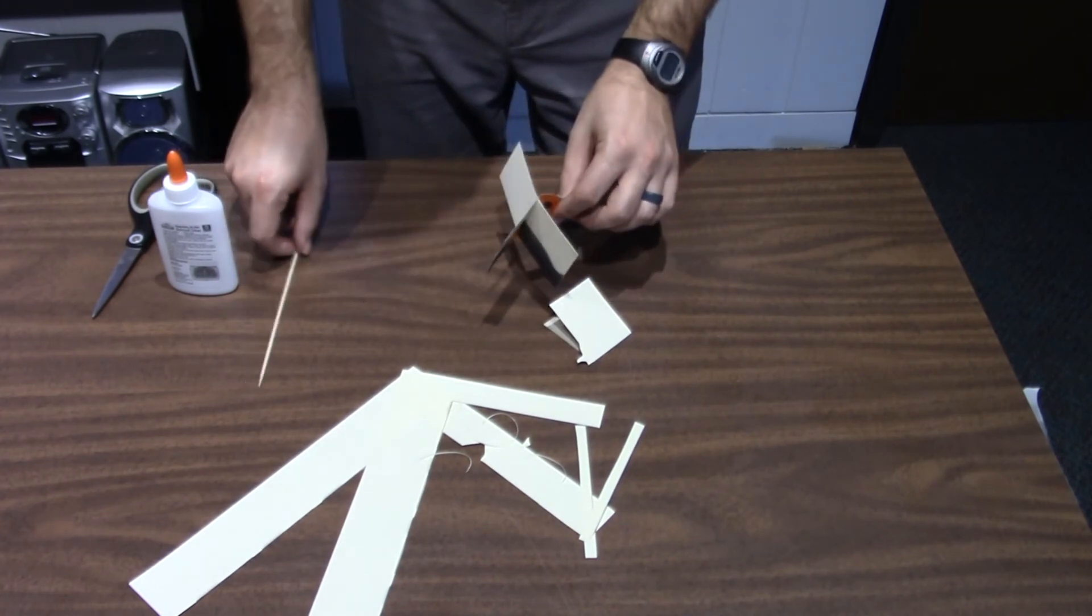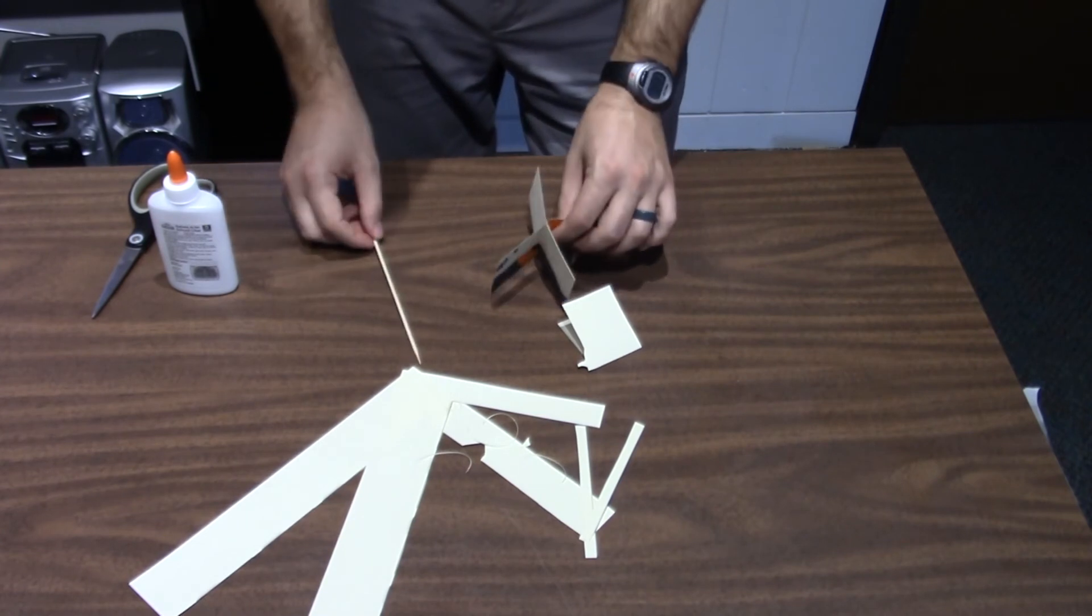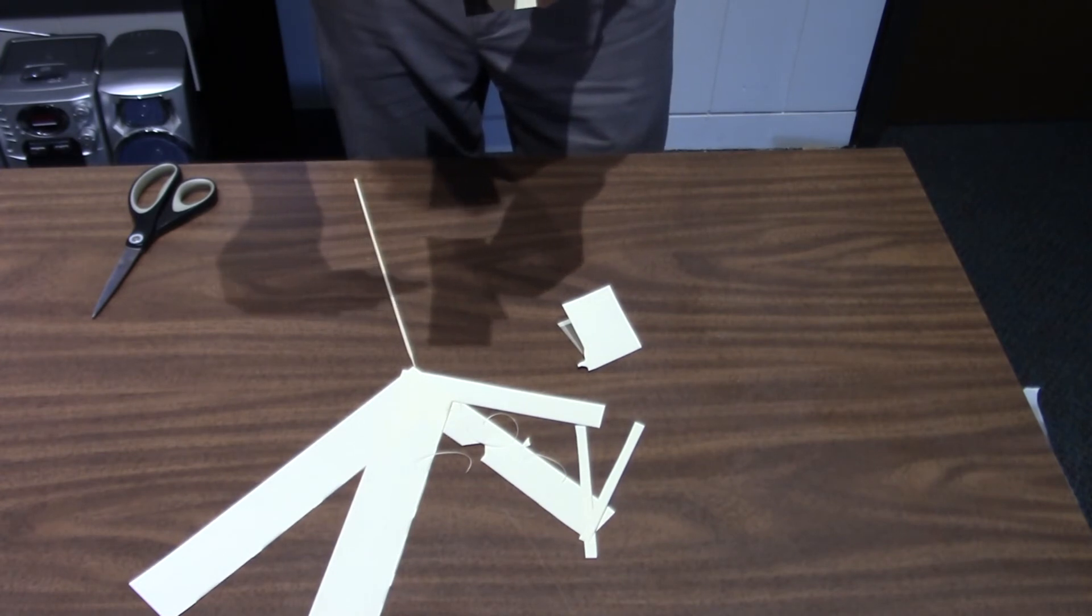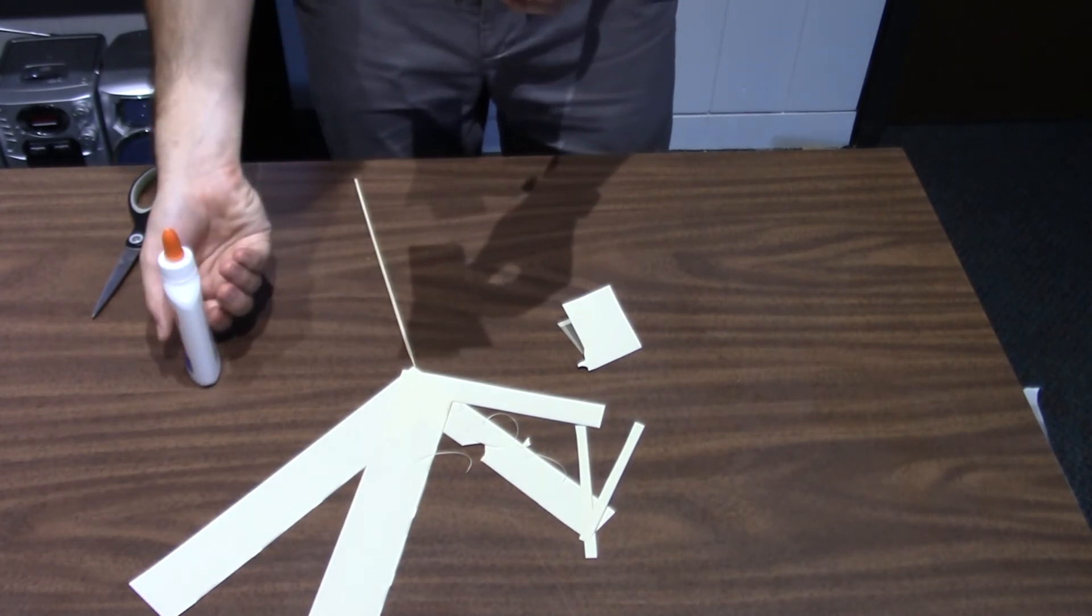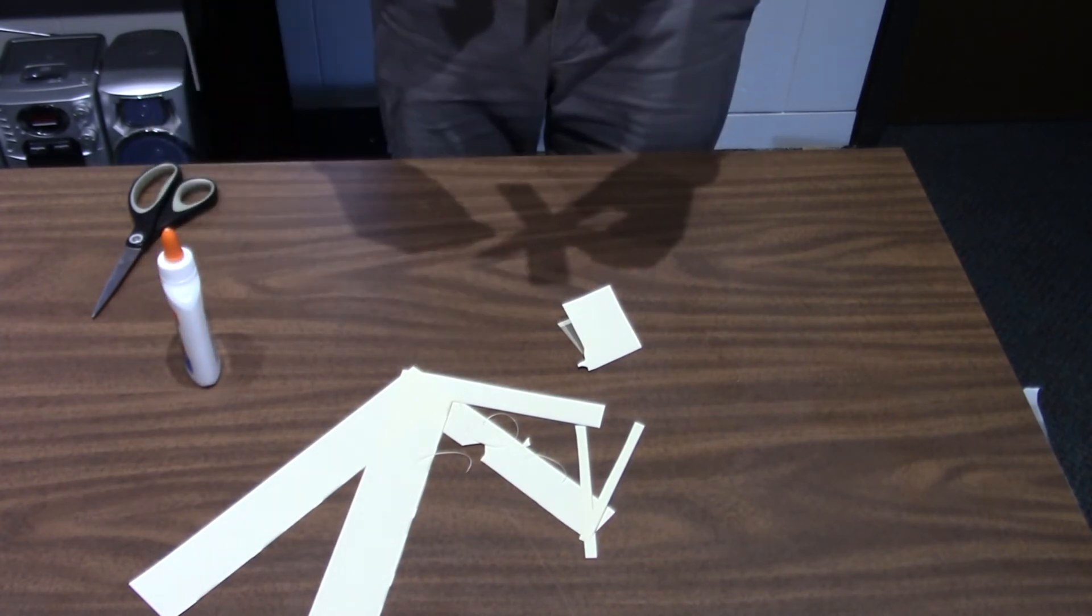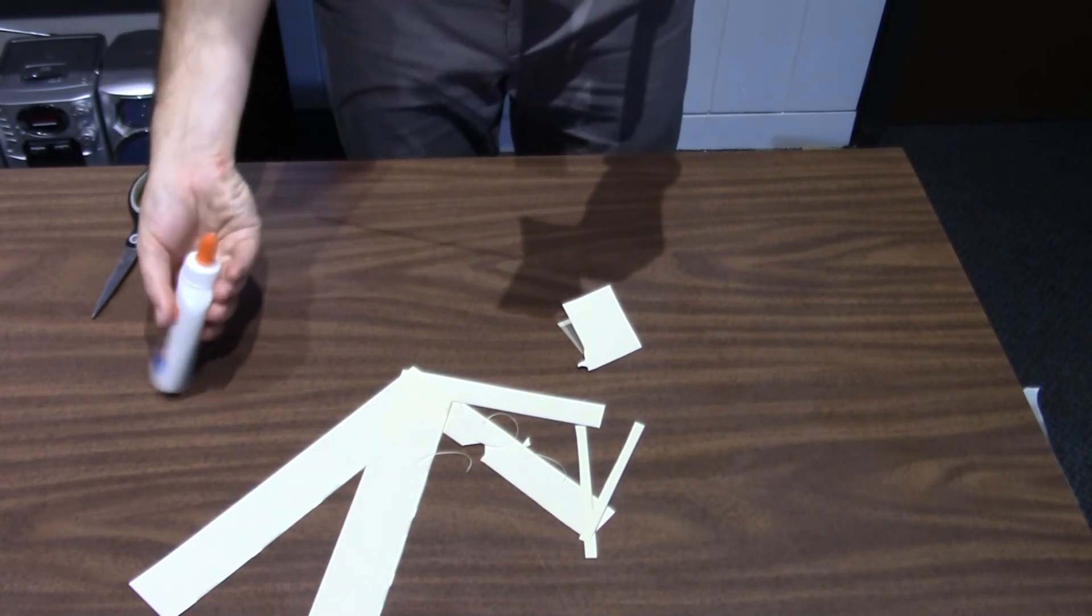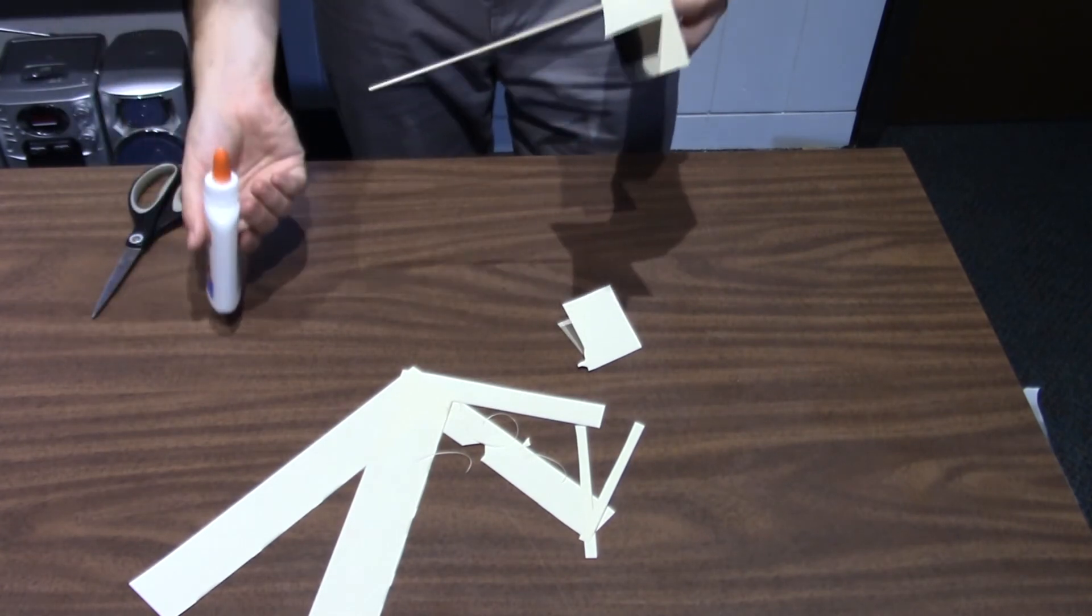Before we glue on the last side, we're going to glue in our skewer or dowel. So you're going to put just a little bit of glue into the middle of the corner there, and you don't need a whole lot of glue but enough to make it stick. I'm going to set that right in the center. And then you probably want to put a little bit more glue, just a little bit along the inside.